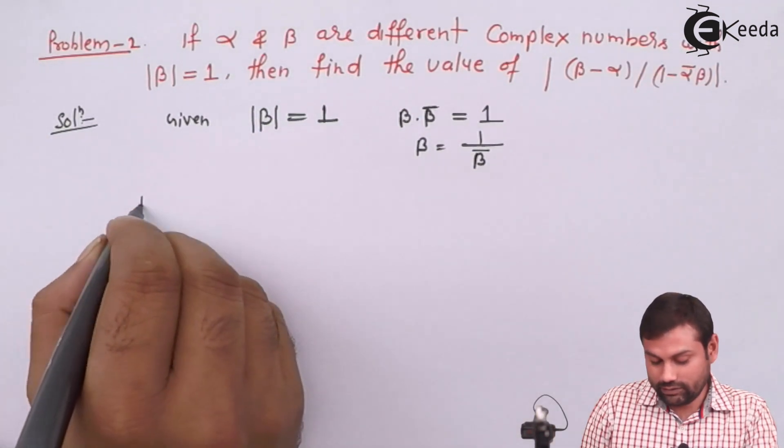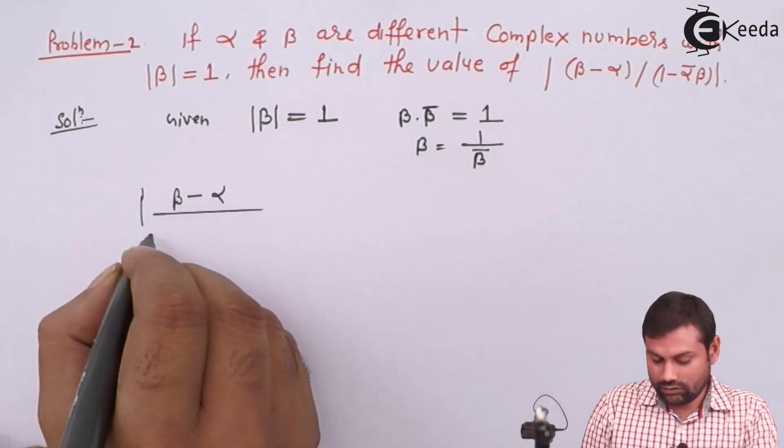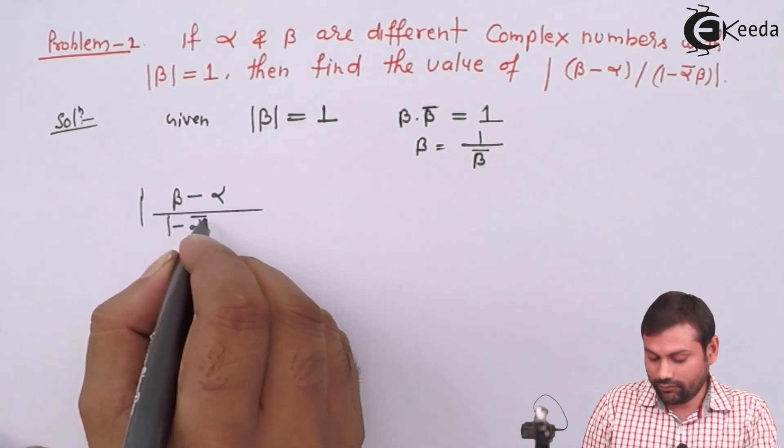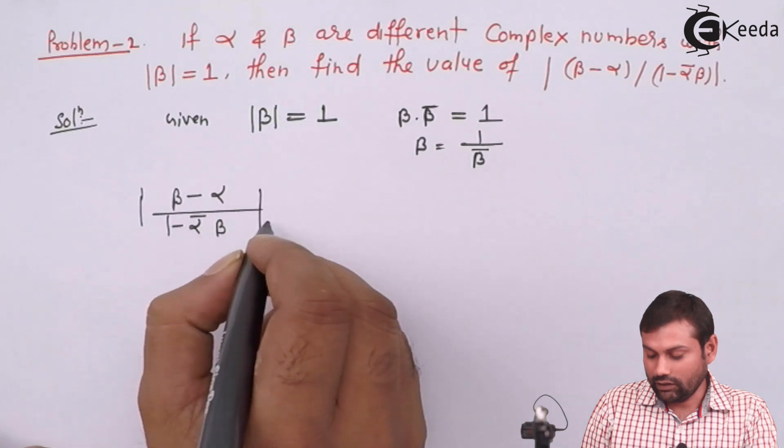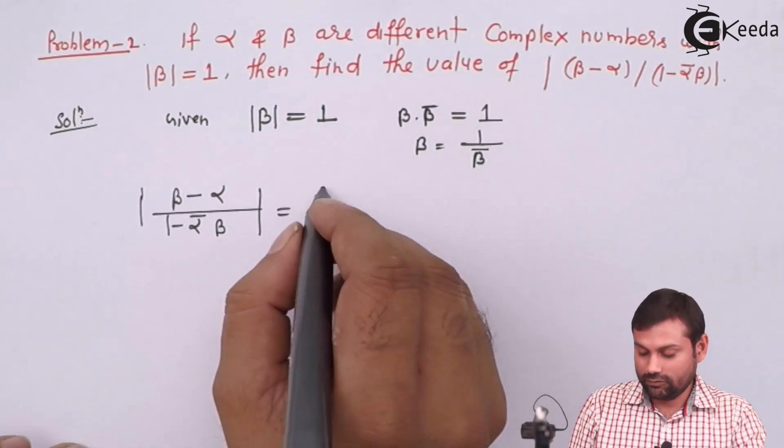Now we will solve the problem. We will substitute β by 1/β̄. So mod of (β - α)/(1 - ᾱβ) becomes mod of (1/β̄ - α)/(1 - ᾱβ).